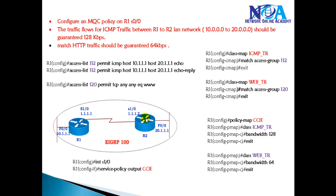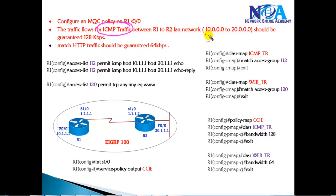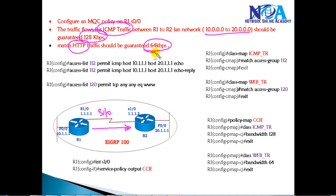As a basic example, the task is: ICMP traffic from the 10.x network to the 2.x network should be guaranteed 128 Kbps when traversing the Router 1 to Router 2 link on the S1/0 interface, and the remaining HTTP traffic should be guaranteed 64 Kbps.